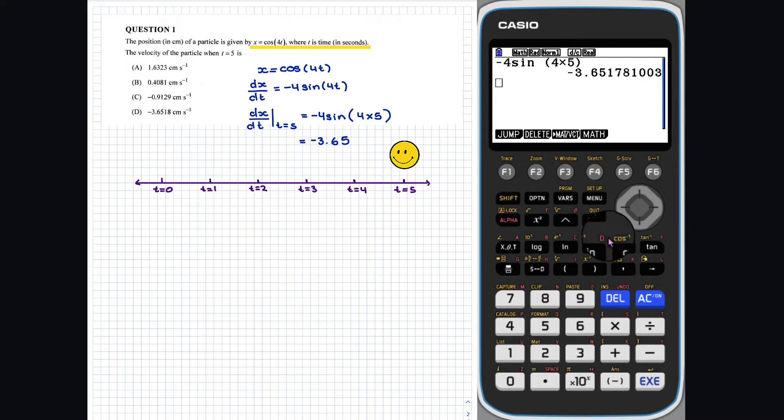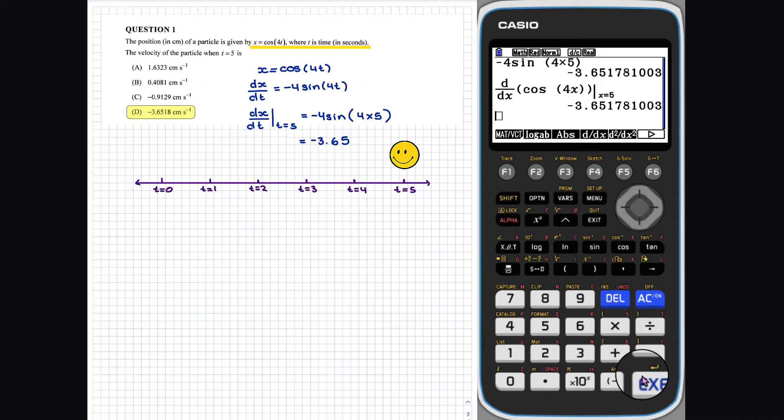Or, we can use our calculator to evaluate the derivative directly. On our calculator, t has to be entered using the variable x. So, our answer is d, negative 3.65 metres per second.